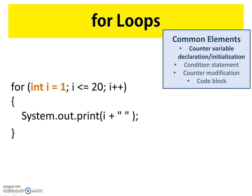Let's review how the common elements apply to this FOR loop. First, the counter variable declaration is listed first in the parentheses — here the variable 'i' has been declared and initialized to one. The second common element is the condition statement: 'i is less than or equal to 20.' If i is less than or equal to 20, the for loop is processed. If i is greater than 20, the loop is skipped. The condition statement is always a boolean that tests true or false.